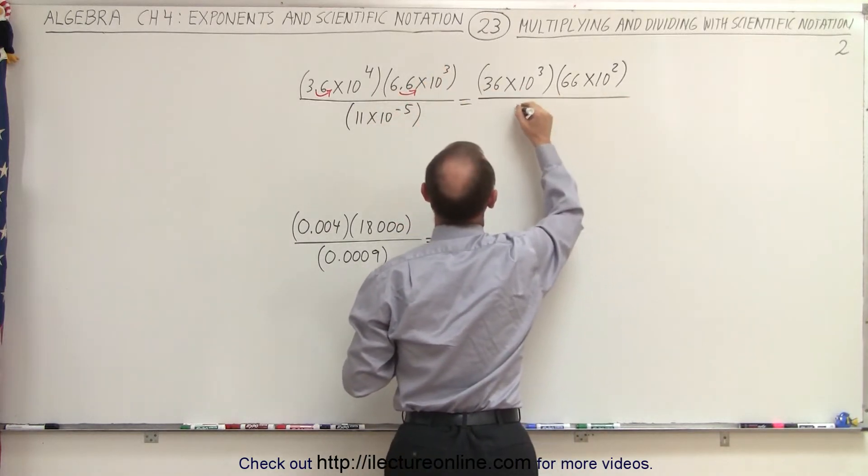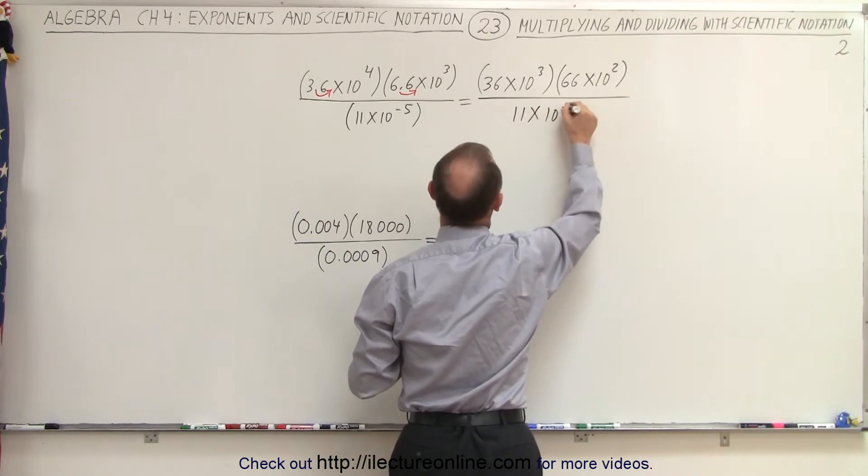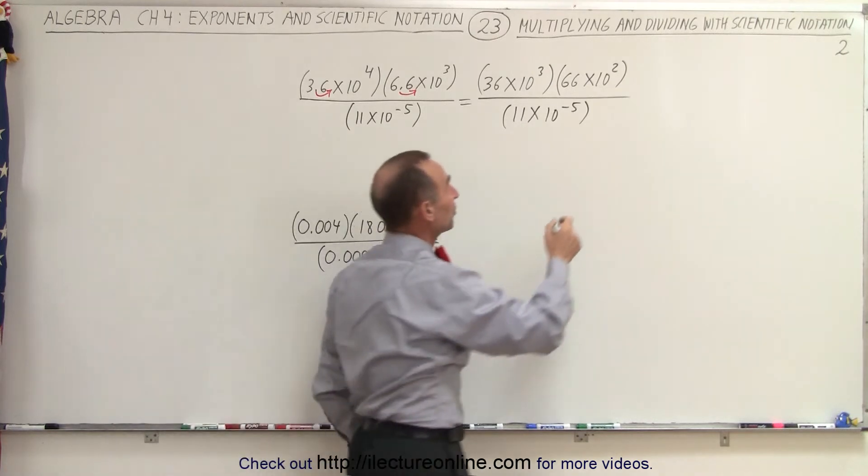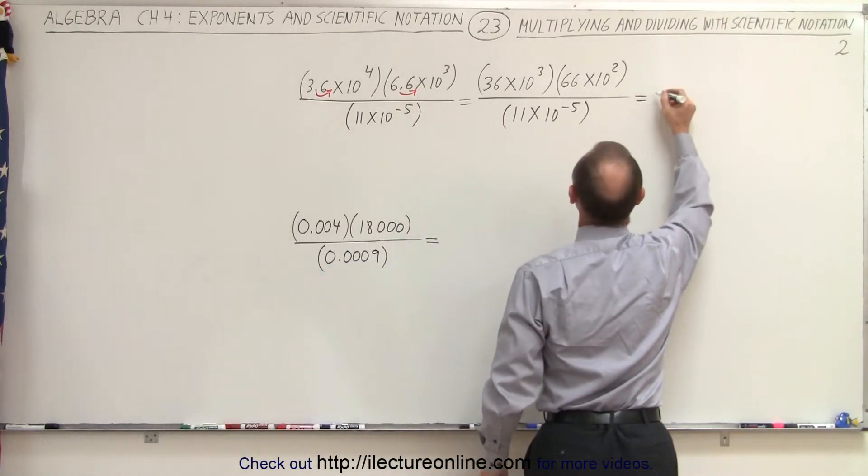And in the denominator, we keep the 11 times 10 to the minus 5. Now when we separate the factors from the 10 to the exponent portions, we get the following.